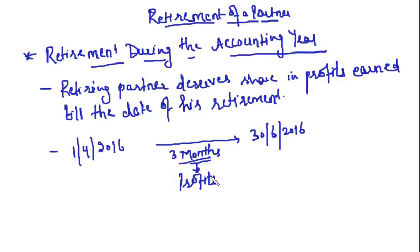The question is: how to calculate this profit for three months? This is the key issue in this topic - how to calculate the profits for the period from the end of the last accounting period till the date of retirement. For that, you will be given the average profits of the past few years.